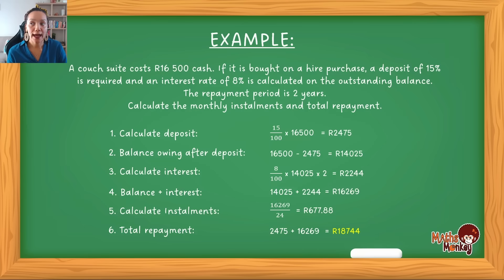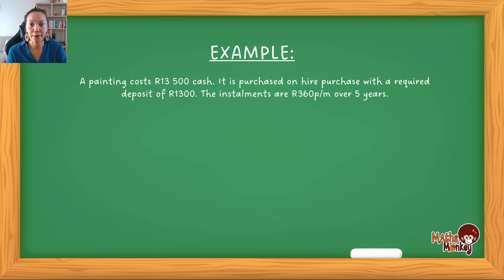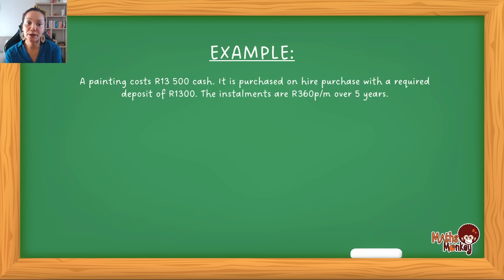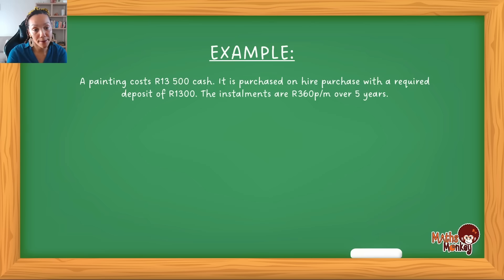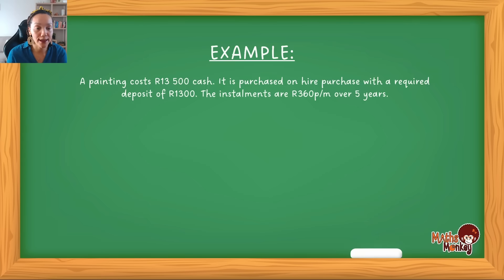Now let's look at how they can give you the information in a different way — where they've already calculated the installment. In this example: a painting costs R13,500 cash. It is purchased on hire purchase with a required deposit of R1,300. The installments are R350 per month over five years. Note that the installment has already been calculated for you — you're not required to do that calculation.